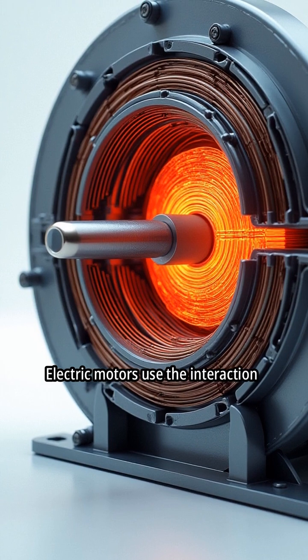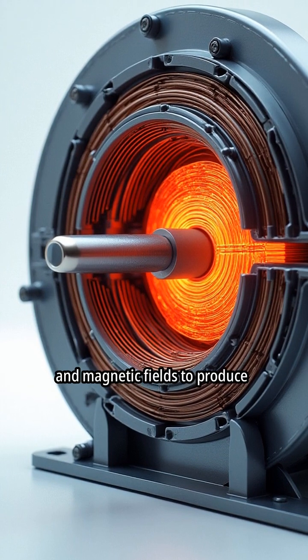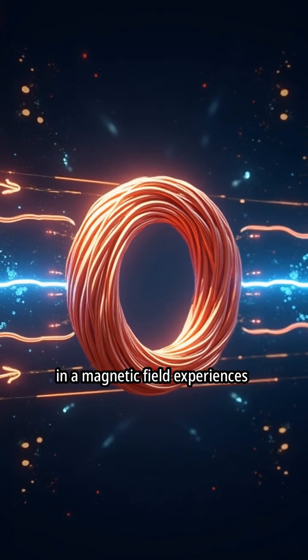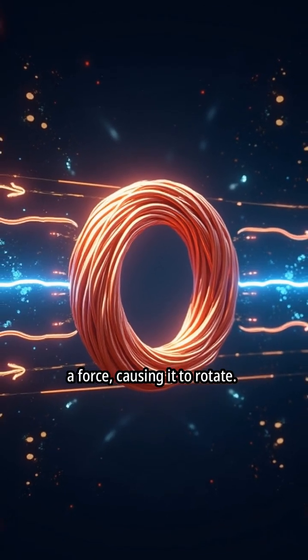Electric motors use the interaction between electric currents and magnetic fields to produce mechanical motion. A current-carrying wire placed in a magnetic field experiences a force, causing it to rotate.